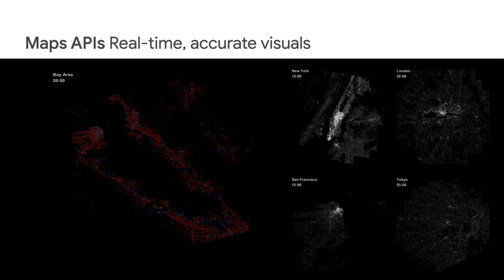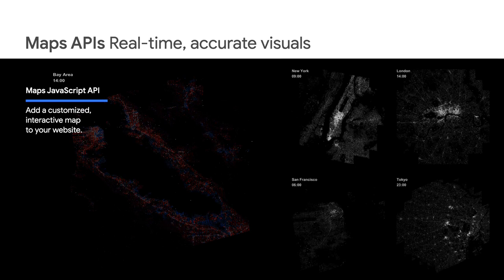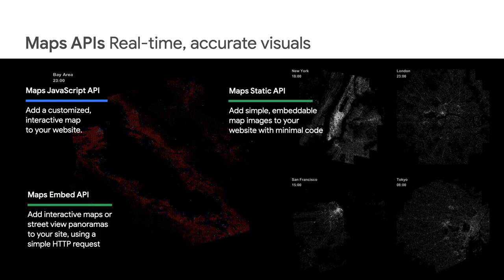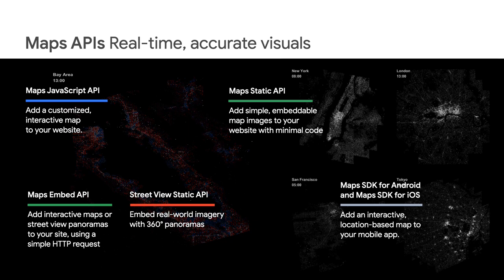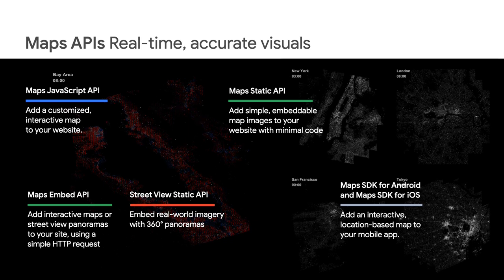Let's start with the Maps APIs. The Maps JavaScript API is our most-used API because web developers use it to build custom maps in their websites and web applications. The Embed API and Static API provide easier ways to get our maps into your website. Street View API makes the 360-degree imagery that we've captured available to your app. Mobile SDKs provide Android and iOS-specific functions for displaying maps in your mobile apps.